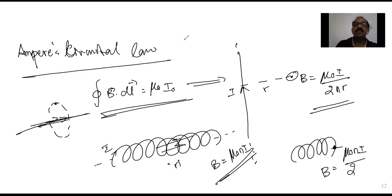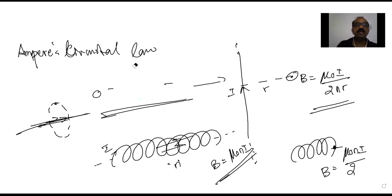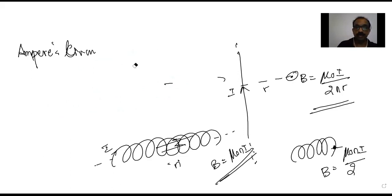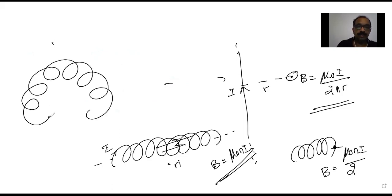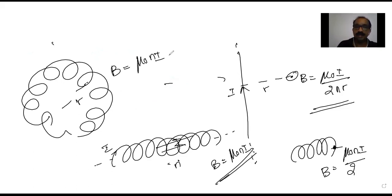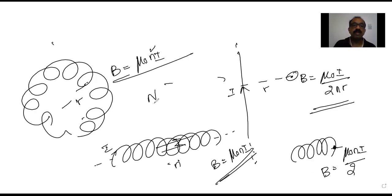Finally, from Ampere's Circuital Law, the expression for the magnetic field due to a toroidal solenoid: for a toroidal solenoid of average radius r, the magnetic field is B = μ₀nI, where small n is the number of turns per unit length. If capital N is the total number of turns, then small n = N / 2πr.